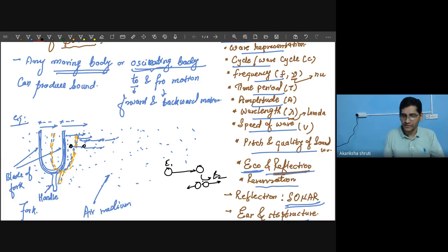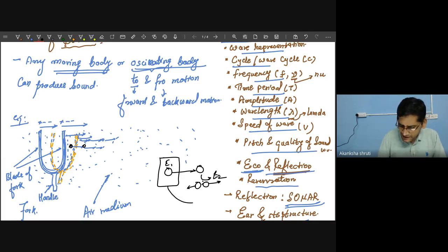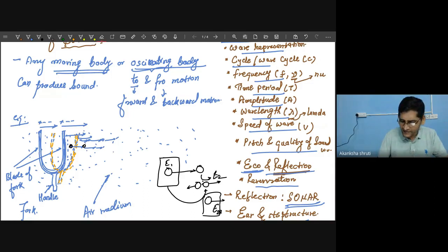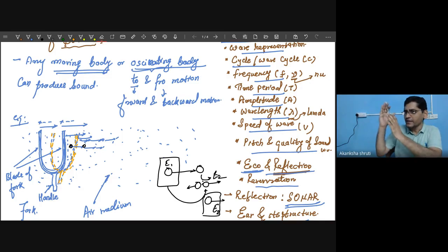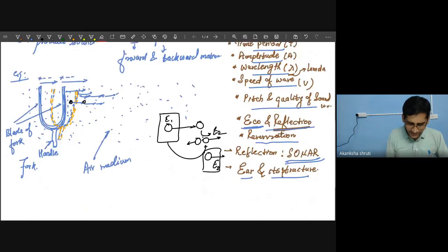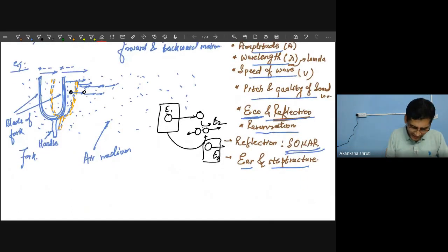After this collision, whatever energy or momentum the first particle had is transferred to the second particle — that may be slightly reduced in an inelastic collision where there is loss of energy too. This way, the energy present with the first particle is transferred to the second particle. The first particle's energy is reduced or, even without much motion of the first particle, the energy is transferred to the second particle, which then hits the third particle, transferring energy to it as well.